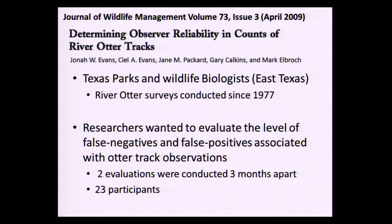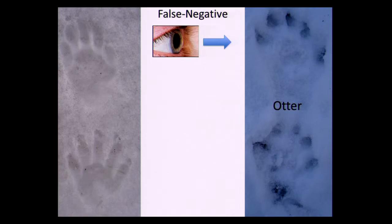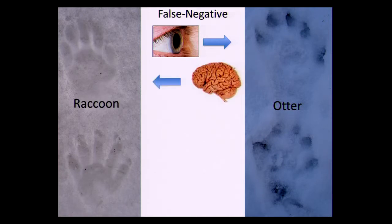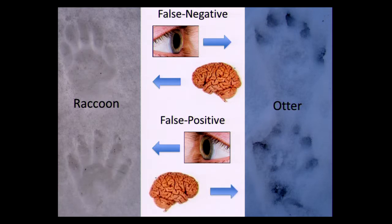A false negative means you're looking at a set of otter tracks but you think it's a raccoon. A false positive means you're looking at raccoon tracks but you think they're otter tracks. The evaluation wasn't focused solely on otter and raccoon — there were many other species. And the biologists called otter on quite a list of species: raccoon, opossum, dog, house cat, rice rats, turtle, and even bullfrog.